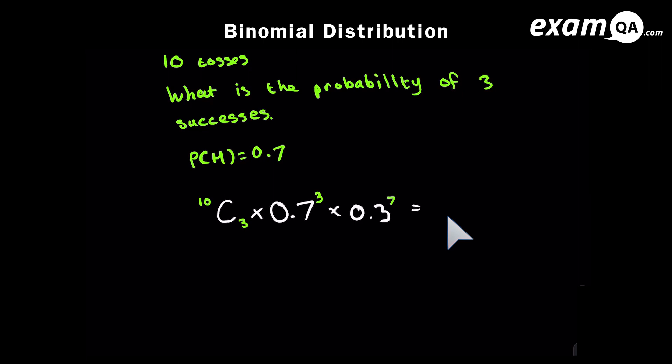It's even easier than that — you don't need to put all of this into a calculator manually. Go to menu, find distributions, and choose binomial PD, because you want exactly three successes. It will ask for N (the number of tosses, which is ten), P (the probability of success), and X (how many successes you want, which is three). It gives you the answer. I'd advise you to use the calculator method rather than writing this all out.